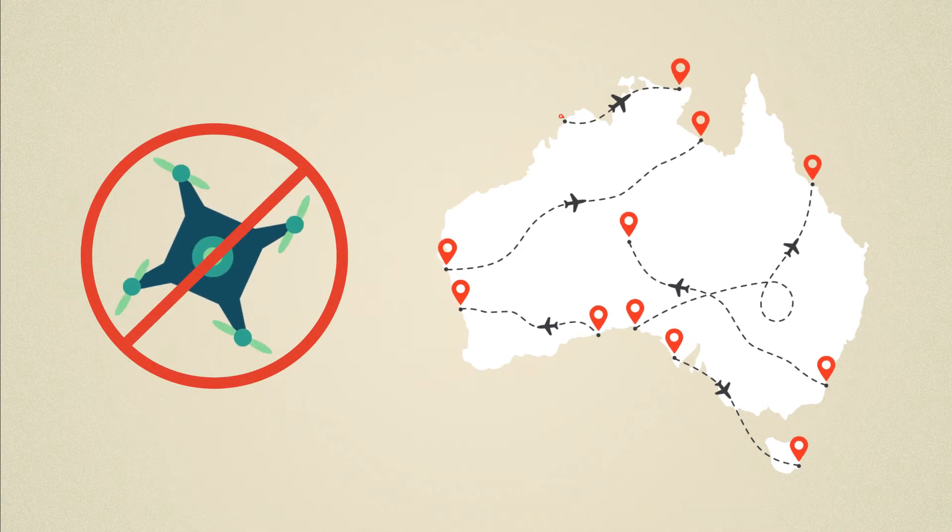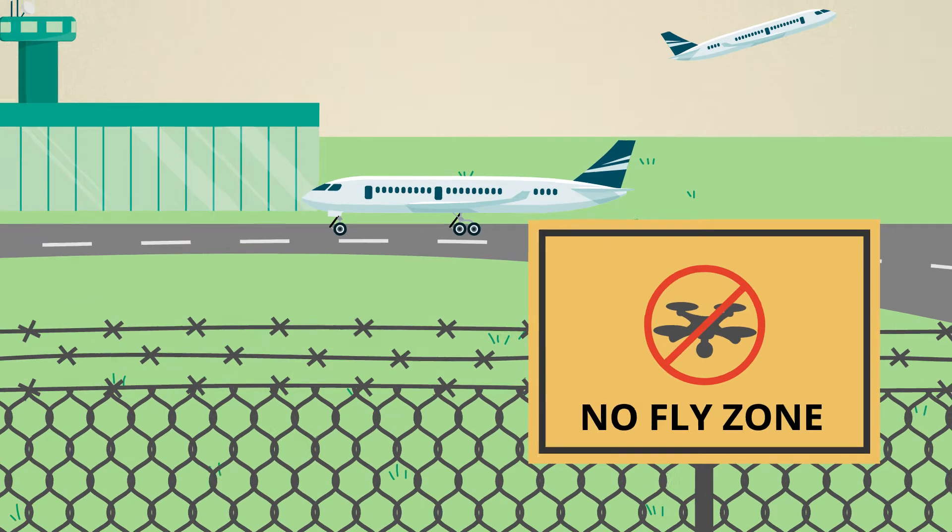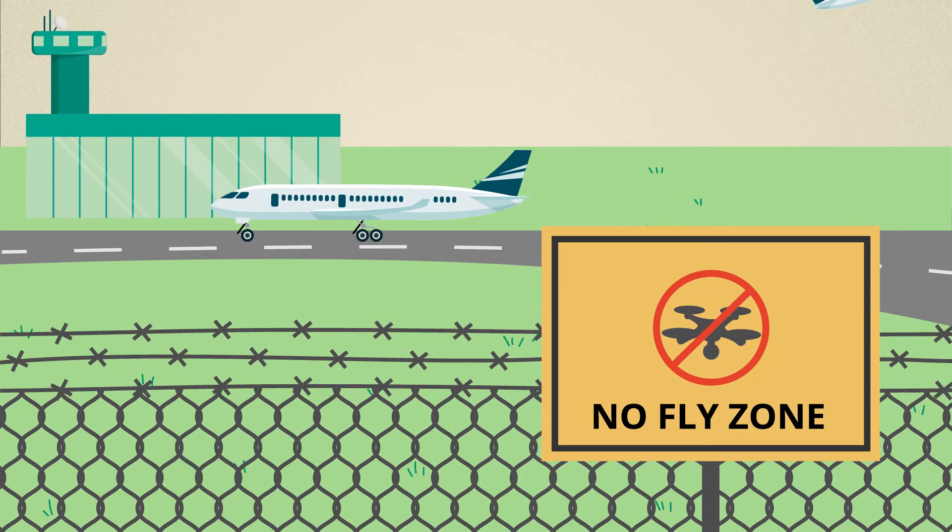No-fly zones have been established around all aerodromes in Australia. The no-fly zones introduce restrictions to operating within three nautical miles of the aerodrome and on the runway approach and departure paths.